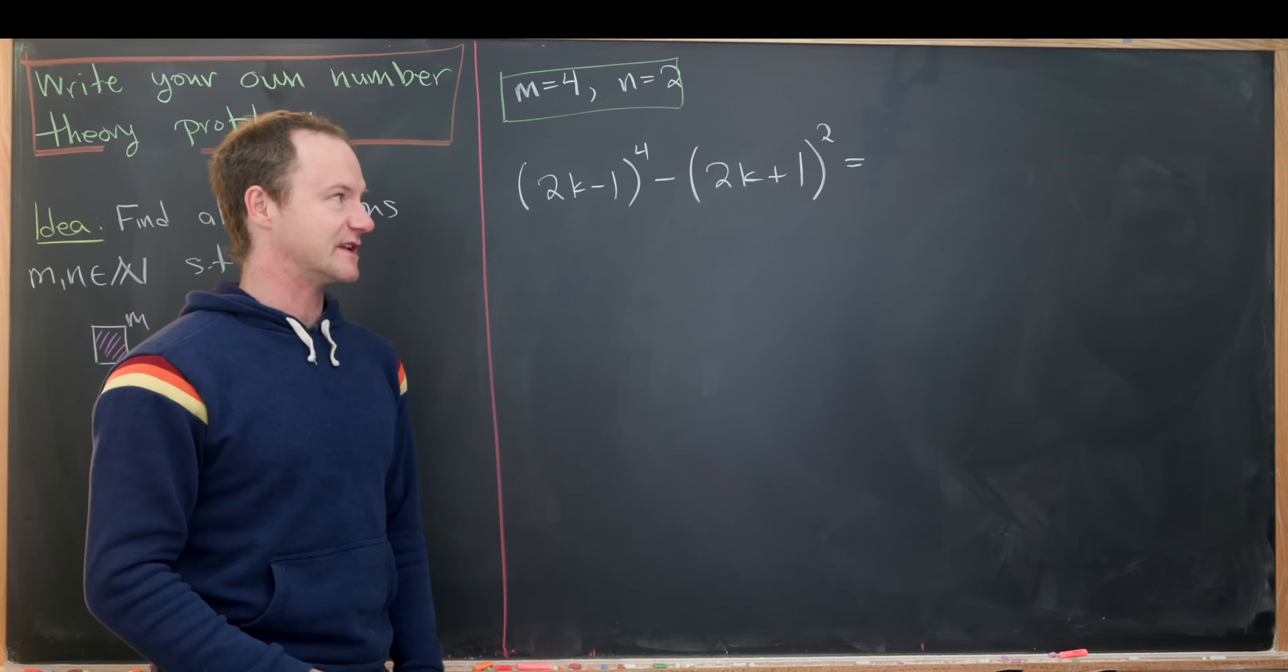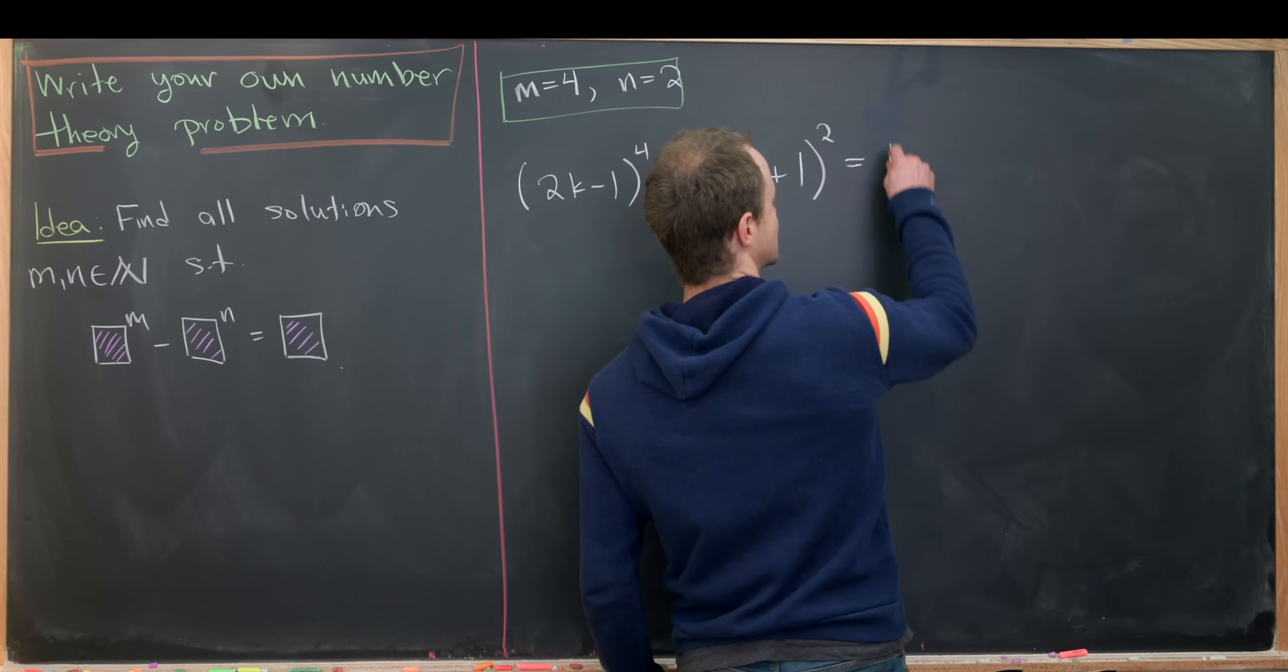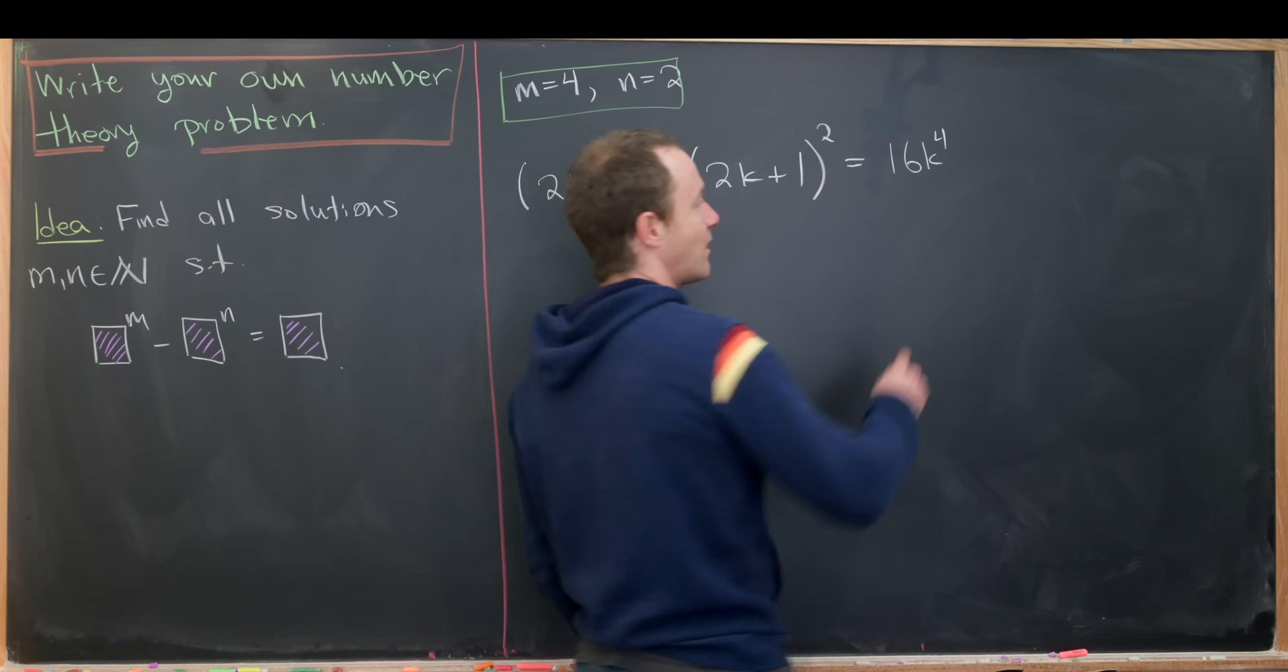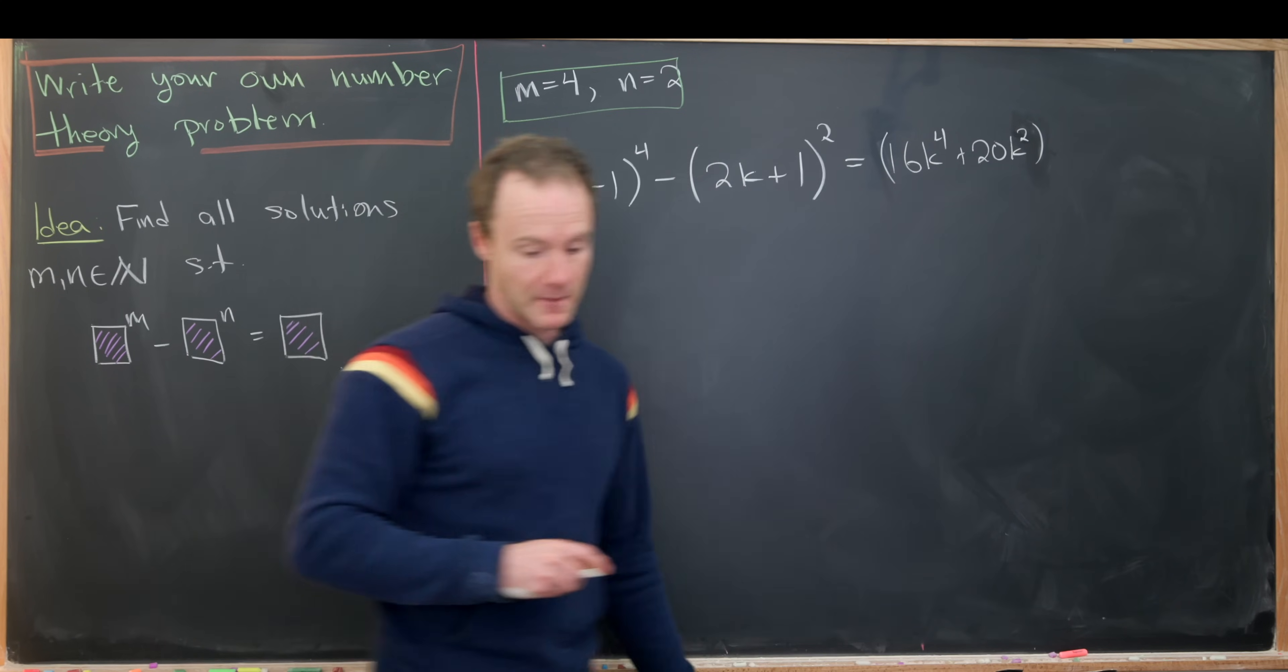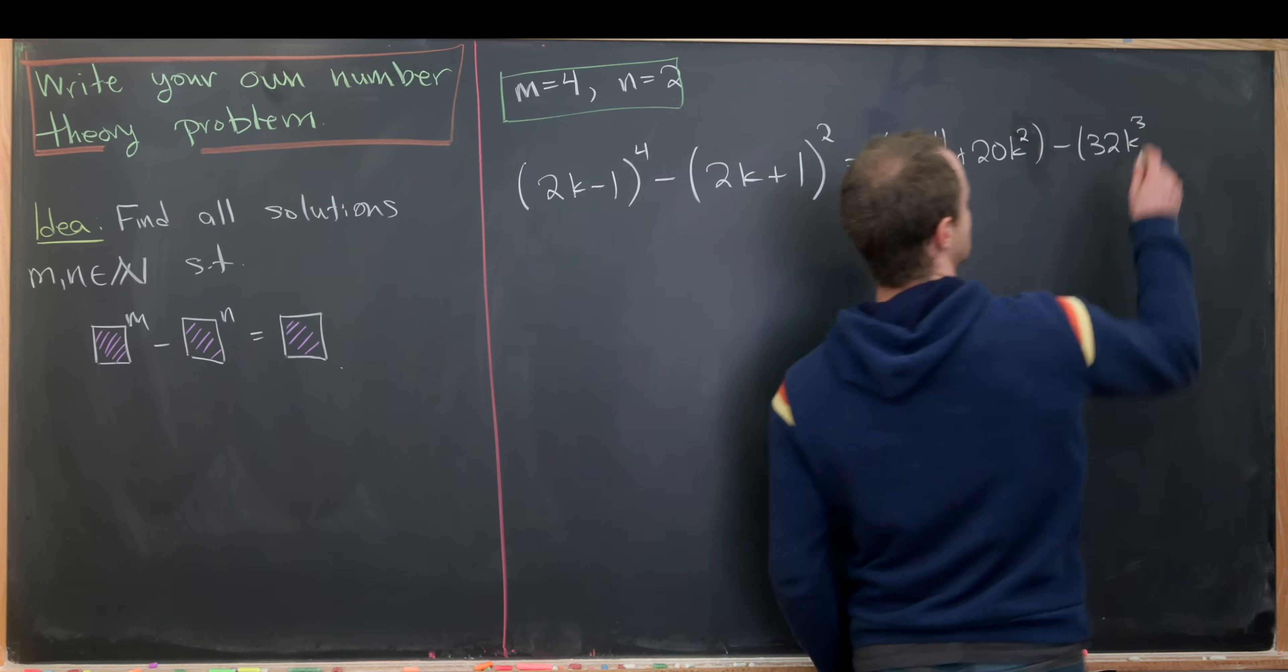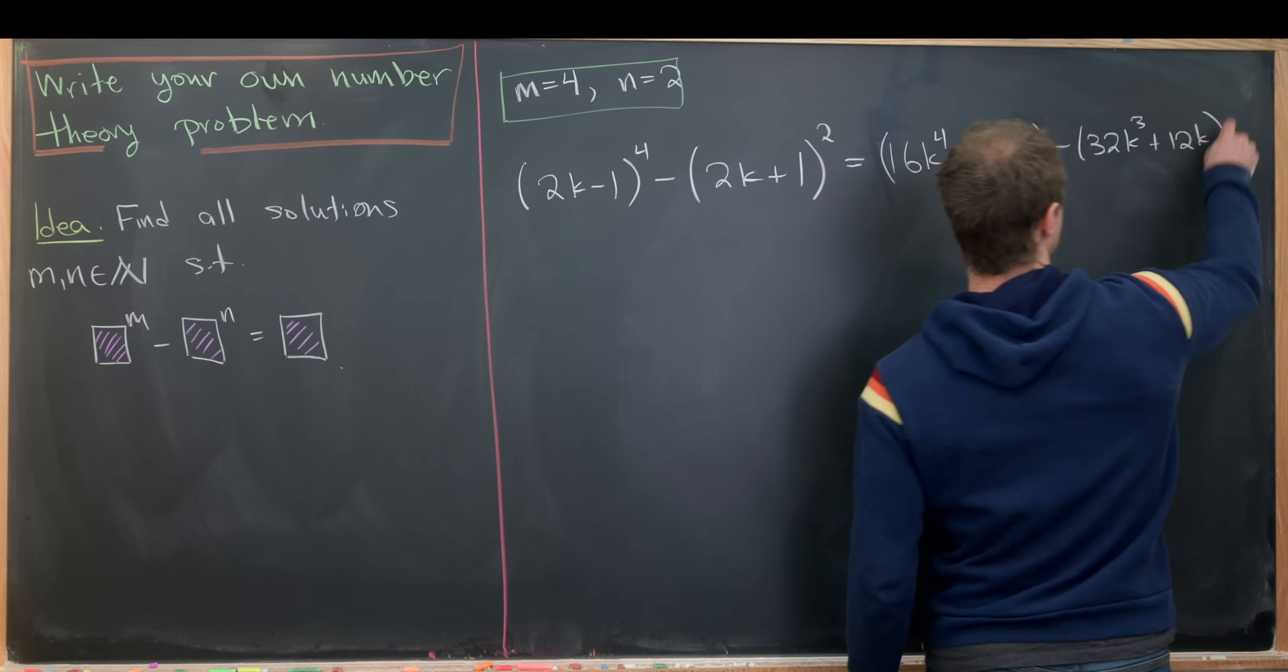If we multiply this out and subtract, which I won't do on camera, we get the following expression: 16k to the fourth plus 20k squared, then minus 32k cubed, and then finally 12k.